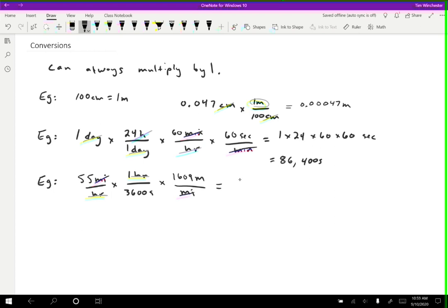So now what I'm left with is 55 times 1,609 divided by 3,600. And that will give me the speed in meters per second. And if I plug that in to a calculator, then what I get is roughly 25 meters per second. So that's a normal car speed, it turns out.